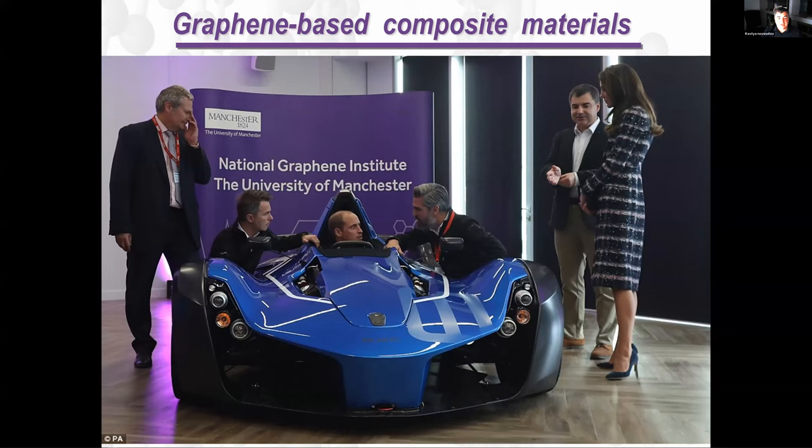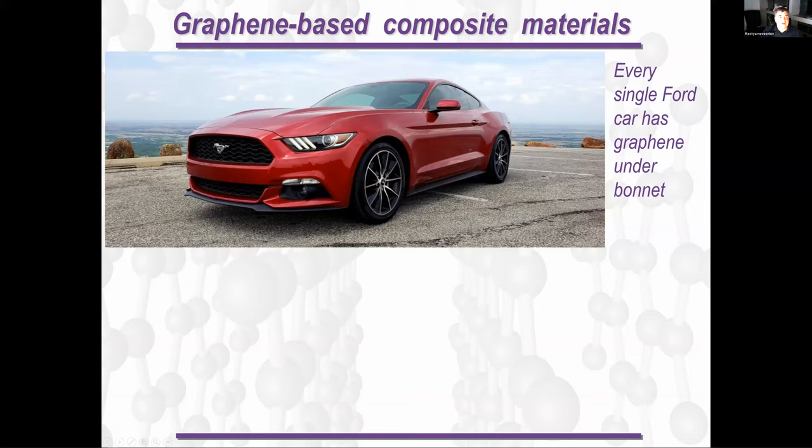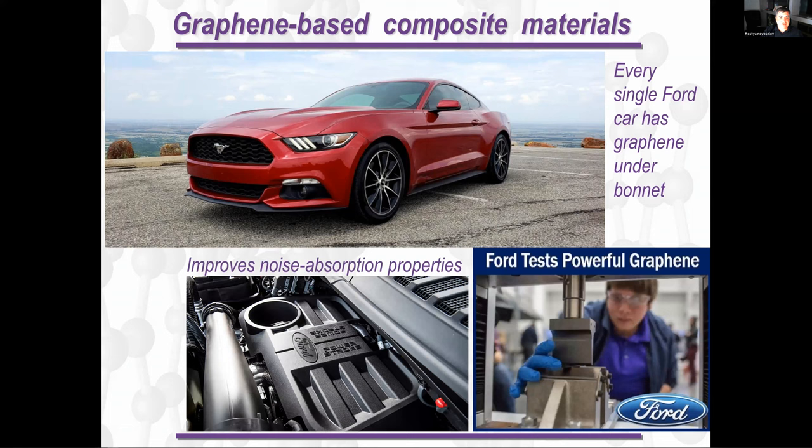It's actually one of the first real applications where graphene is actually being used not for the sake of mass reduction or strength. It's actually to speed up the production because of its thermal conductivity. These days, graphene can be found in pretty much every single Ford car. And its application is quite unusual - it's for noise cancellation properties.